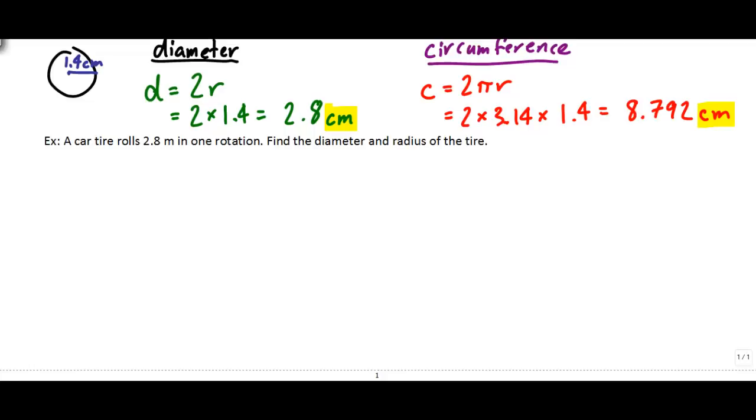Okay, the last example here. So a car tire rolls 2.8 meters in one rotation. So imagine we've got a car tire here. And it rolls 2.8 meters in one rotation. So that means it goes from here and it goes all the way along this distance in one rotation. So it ends up kind of over here. Well, the distance traveled by a tire, as we saw in the example in class, the distance traveled by the tire is equal to the circumference. So the circumference of the tire must be 2.8 meters.